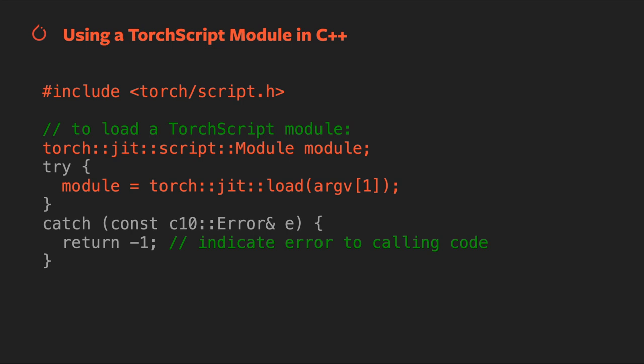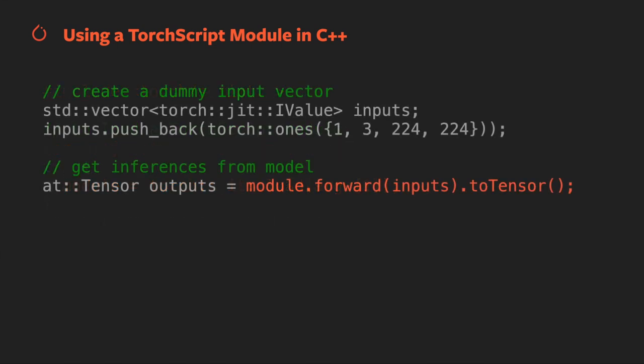Next, declare a torch::jit::script::Module variable, then use torch::jit::load to load it into memory. To get predictions from your model, call its forward method with an appropriate input — here we've created a dummy input with torch::ones. You'd be bringing in your own inputs of whatever size your model requires. Once you have your output predictions as a tensor, you can manipulate them with the C++ equivalents of the tensor methods you're used to in PyTorch's Python frontend. The PyTorch.org tutorial section includes content walking you through setting up a C++ project, as well as multiple tutorials demonstrating aspects of the C++ frontend.